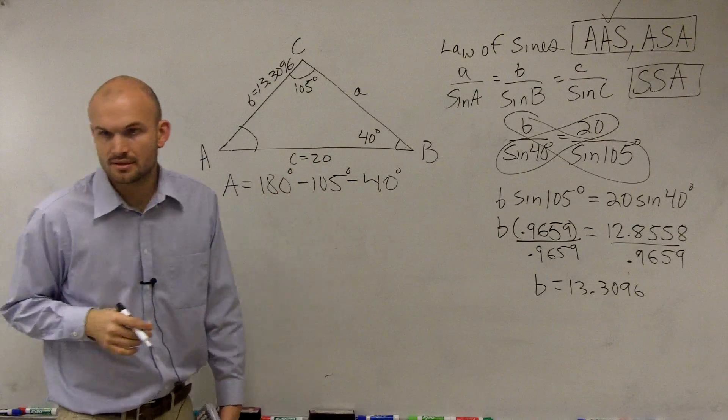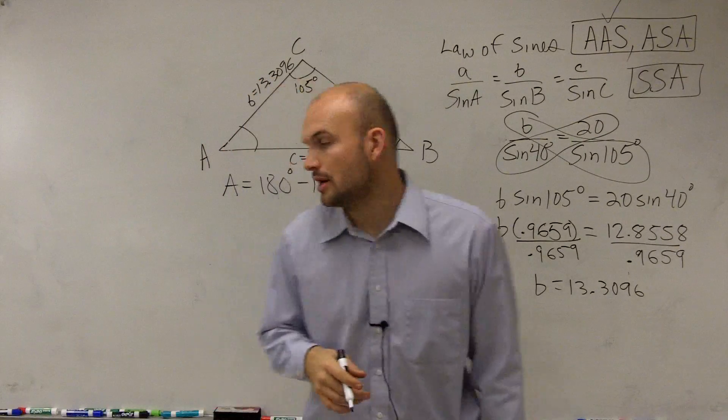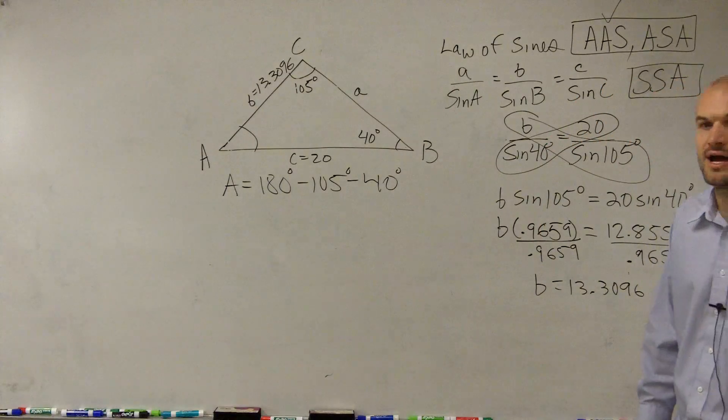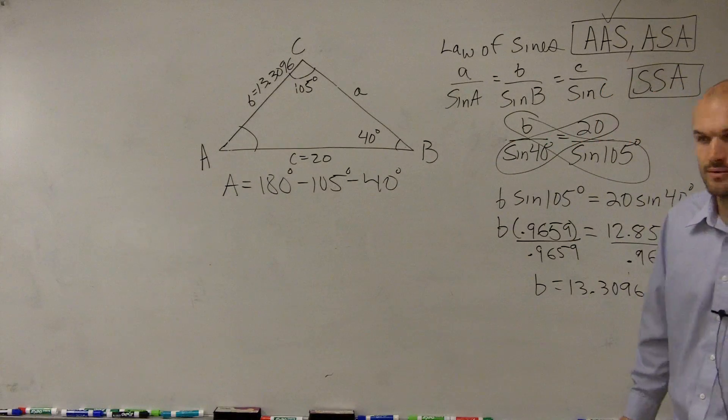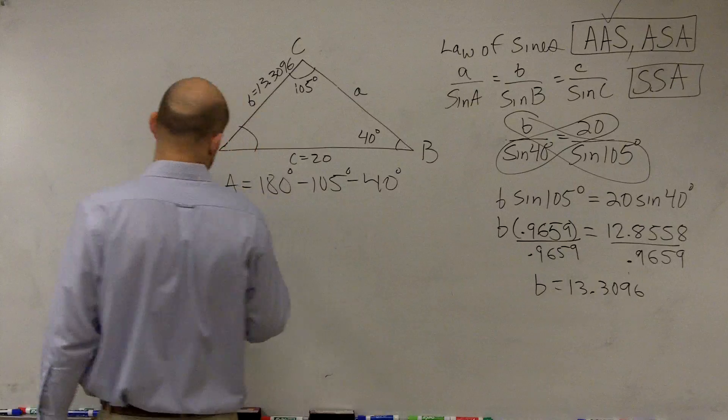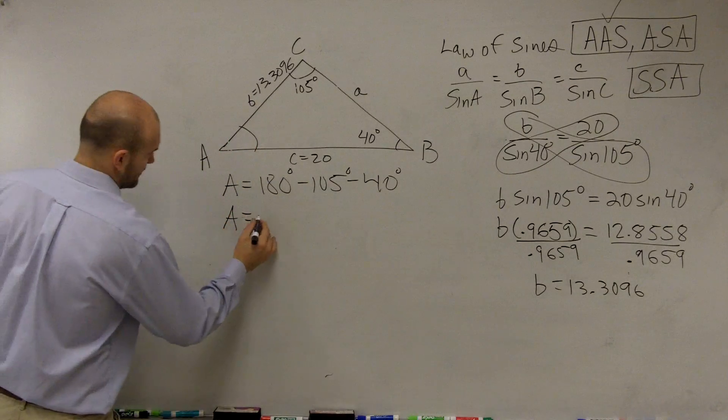So I could say A equals 180 minus 105 minus 40 degrees, right? Does that make sense? Because if you subtract those two, then you'll get that. So therefore, that's going to equal... So you'll have A is going to equal 35 degrees.